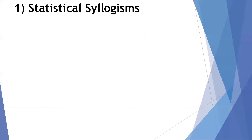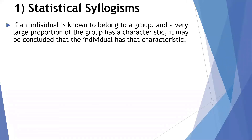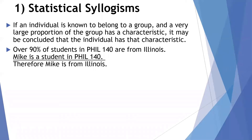The first form we are considering is that of a statistical syllogism. This can be described as reasoning in the following way: if you have an individual that's known to belong to a larger group, and a very large proportion of that group has a certain characteristic, then you can conclude that the individual has that characteristic as well. For example: over 90% of students in Philosophy 140 are from Illinois; Mike is a student in Philosophy 140; therefore, Mike is from Illinois.